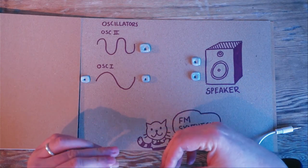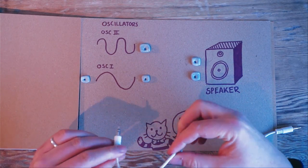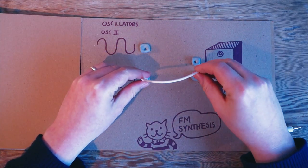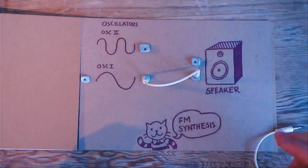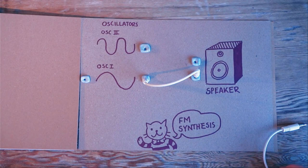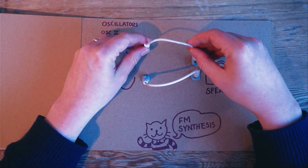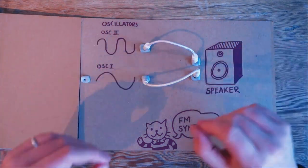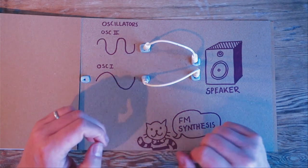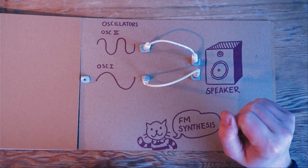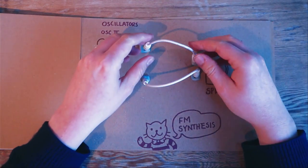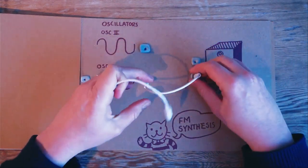FM stands for frequency modulation. If we take a waveform and we plug it into our output, it will sound like this. If we take another waveform, slightly different frequency, and we plug that into our output too, it sounds a bit like this. You hear both of the waveforms and it creates a little chord. This is not FM. So let's disconnect that.